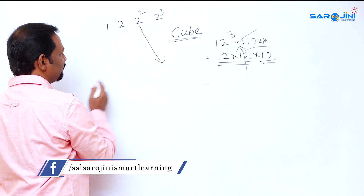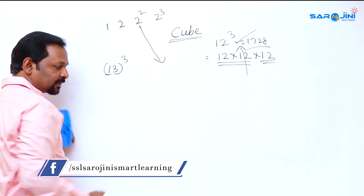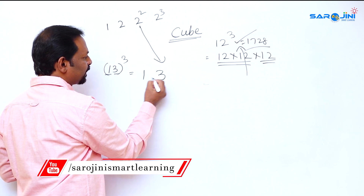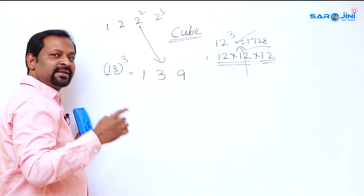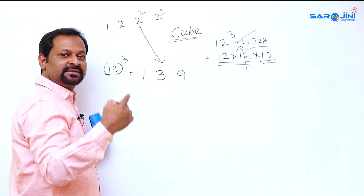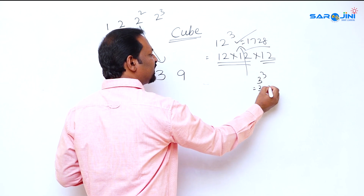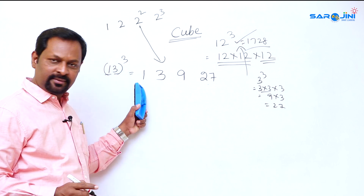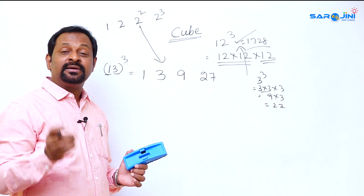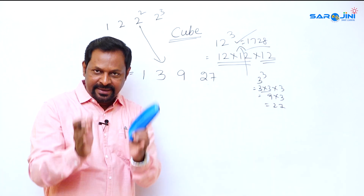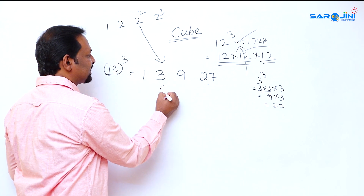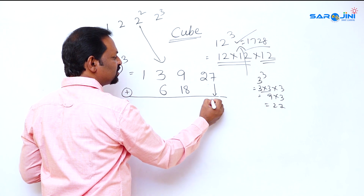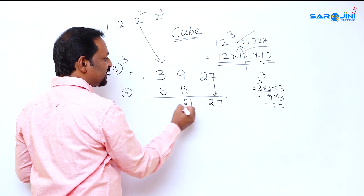Now let's take 13 cubed. First term is 1, second term is 3. Write: 1, then 3, then three squared which is 9, then three cubed which is 3 × 3 × 3 = 27. So we have: 1, 3, 9, 27. Now leave the first and last parts — take the middle values 3 and 9 and double them: double of 3 is 6, double of 9 is 18.